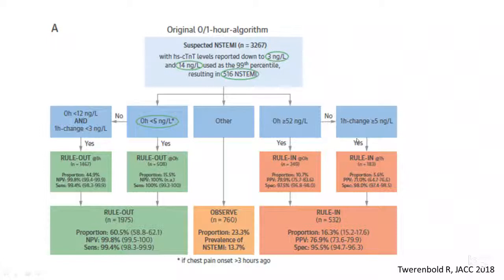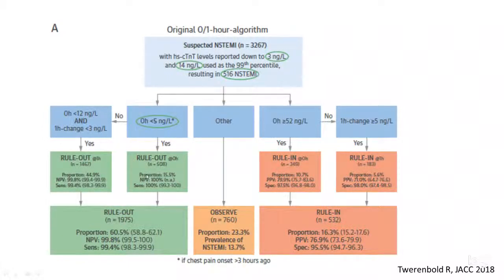Another helpful flowchart evaluated 560 patients with non-STEMI presentations. If the troponin at zero hours is less than 12 and the change within one hour is less than three, those patients can potentially be ruled out. Similarly, if the troponin at zero hours is less than five with no significant change within an hour — less than five change — you can also rule them out.